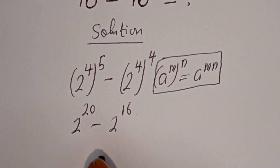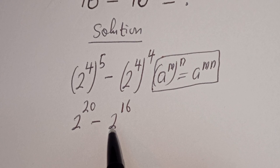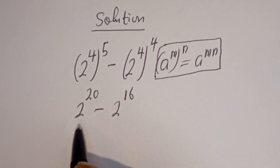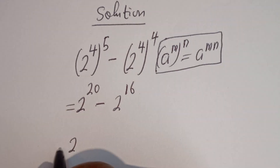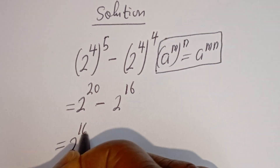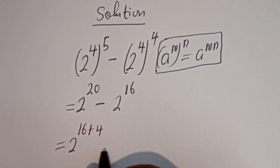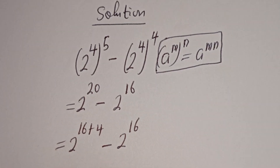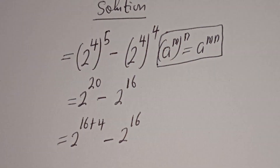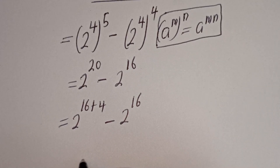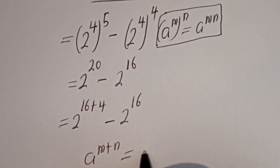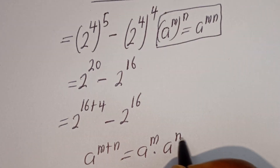Then here we have 2 to the power of 20, and this can be written as 2 to the power of 16 plus 4, minus 2 to the power of 16. Take note that if you have a to the power of m plus n, it is equal to a to the power of m multiplied by a to the power of n.